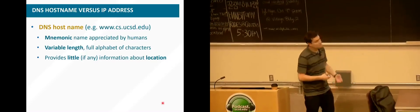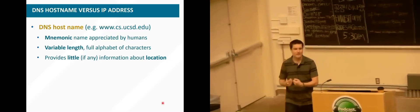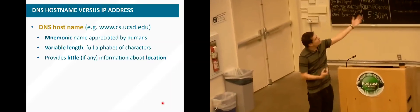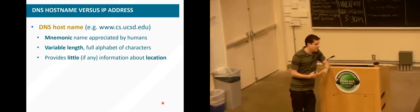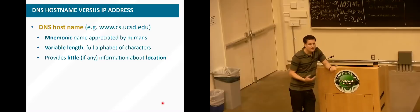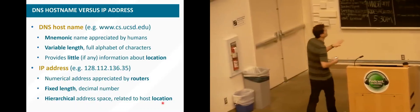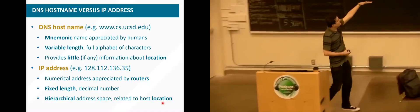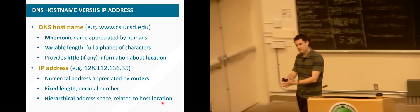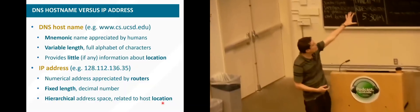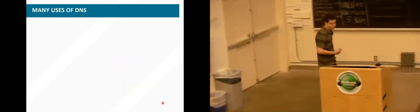These names can be variable length, and don't even have to be US ASCII anymore — they can be Unicode and different character sets. But they don't tell you anything about the location. On the other hand, an IP address is understood by routers — it's fixed length, and its hierarchical structure means we can look at it and figure out where that network actually physically is. So we have to bridge between host names, which people like, and IP addresses that computers like — and we're going to use DNS for that.